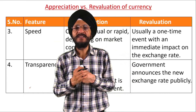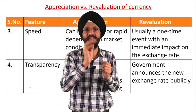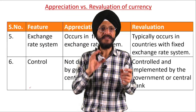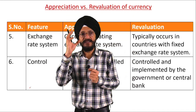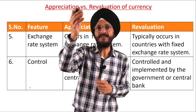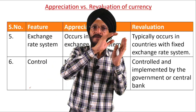Next is transparency. In the case of currency appreciation, market forces — demand and supply — determine the exchange rate, so it is generally transparent. But in the case of revaluation, the government or central bank publicly makes an announcement about the exchange rate. Regarding the exchange rate system: currency appreciation occurs under a floating exchange rate system, while revaluation generally occurs in countries with a fixed exchange rate system, where the government takes steps to maintain a fixed rate between their domestic currency and other currencies.